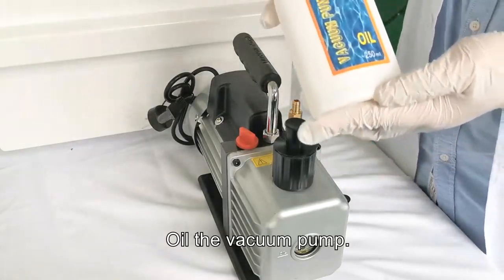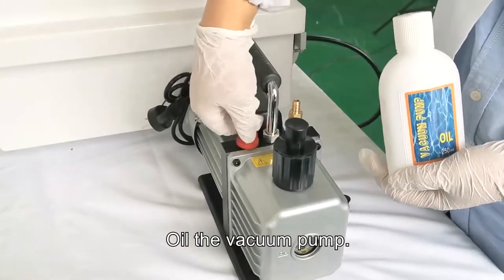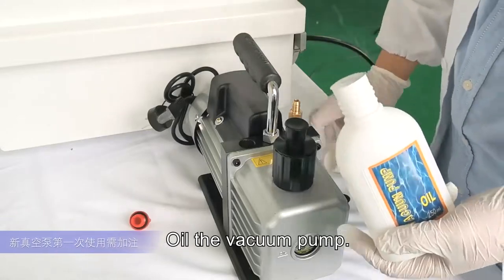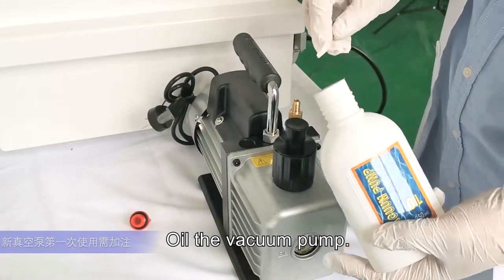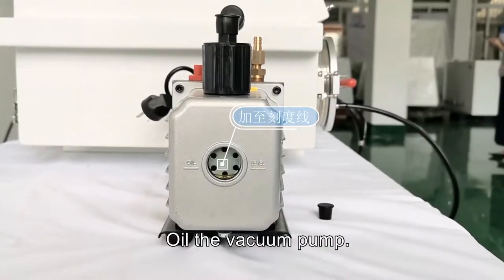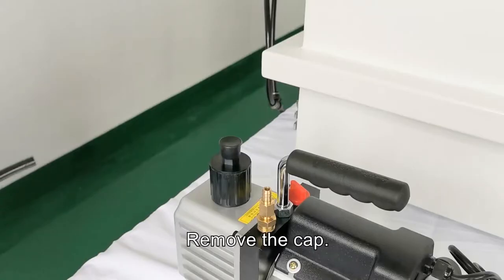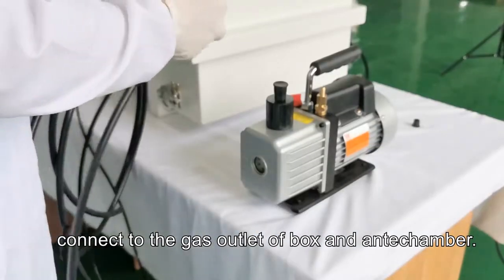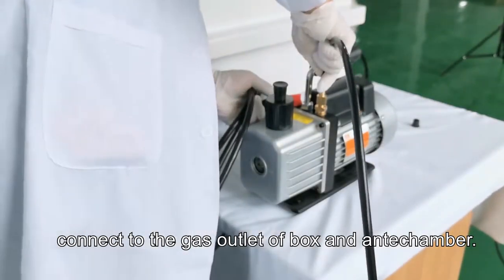Oil the vacuum pump. Remove the cap. Connect to the gas outlet of the box and the anti-chamber.